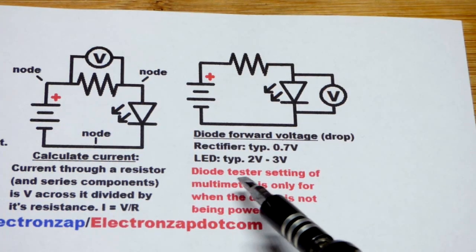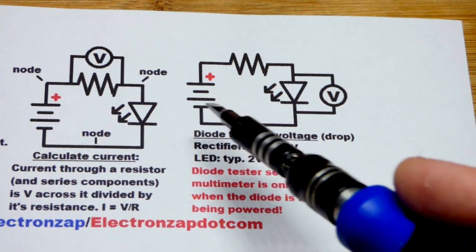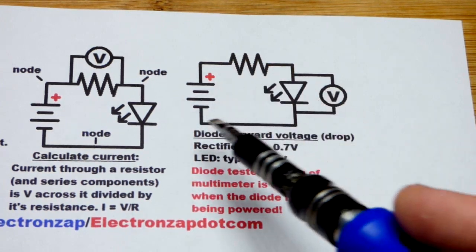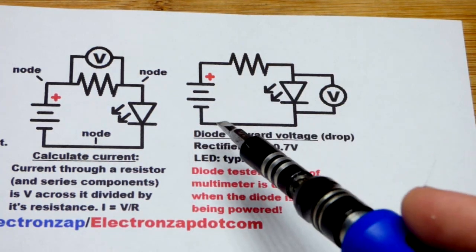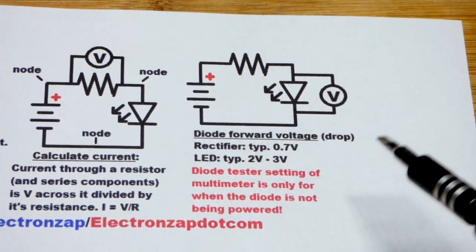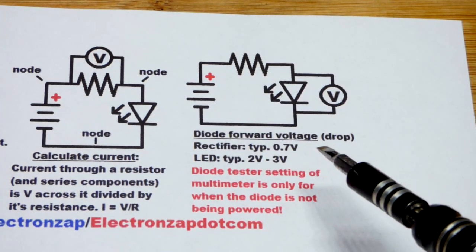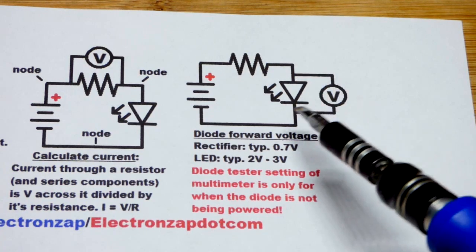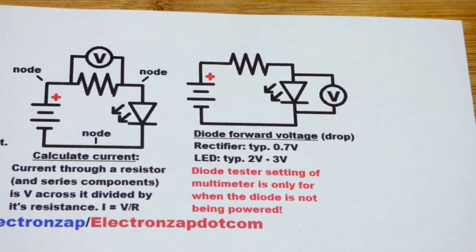But in any case, most meters have a diode testing setting. Do not do that while it's part of a circuit. You don't do that testing while there's being powered applied, just like you don't measure resistance. So when power is being applied, unless you're measuring current, that's completely different. But usually, voltage is the only measurement that you will take.